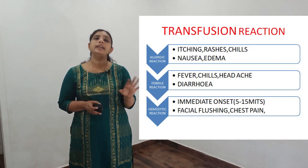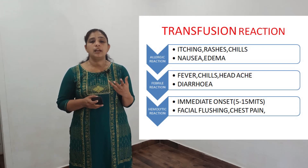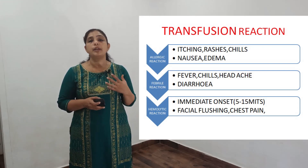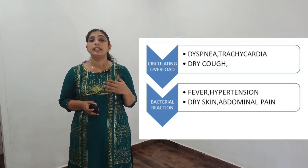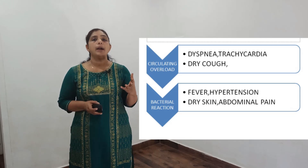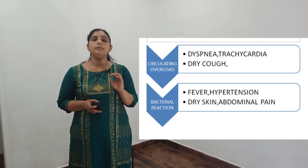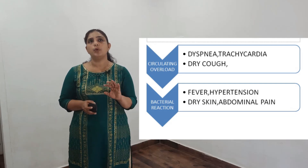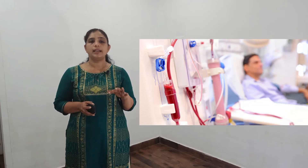Hemolytic reaction has an immediate onset, within 5 to 15 minutes. The patient will have facial flushing and chest pain. Next is circulatory overload, which is fluid overload. The patient will have dyspnea, tachycardia, and may progress to pulmonary edema. CKD patients on dialysis are especially at risk; they can develop circulatory overload.